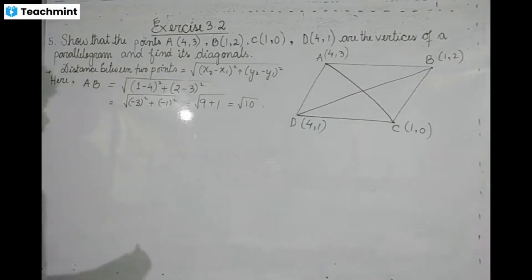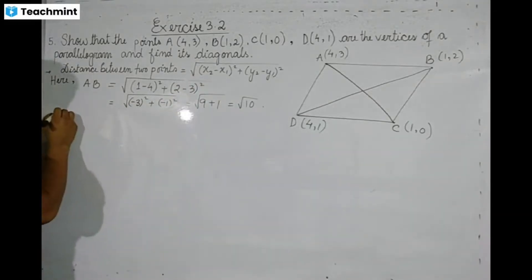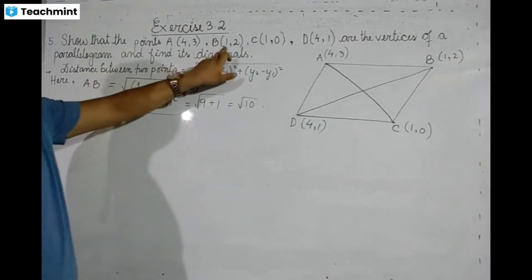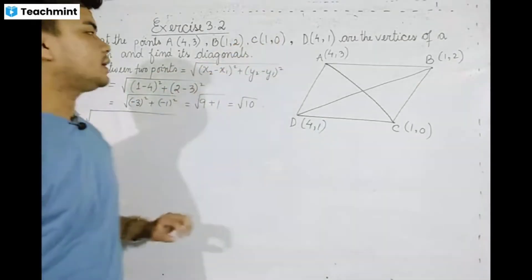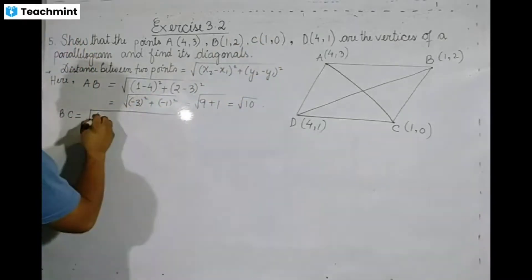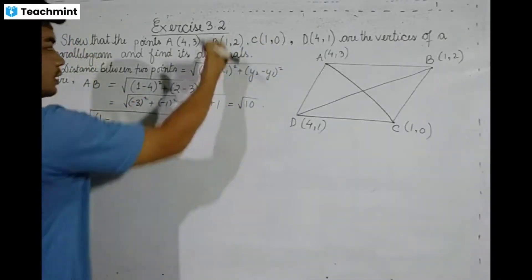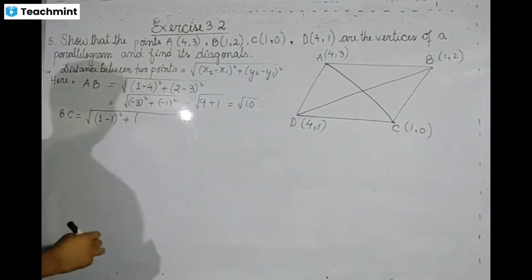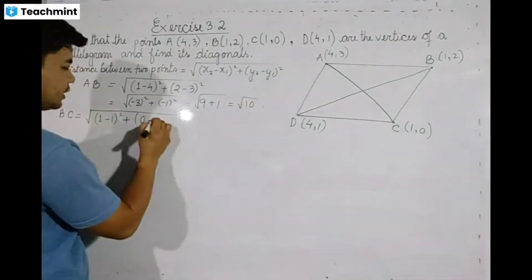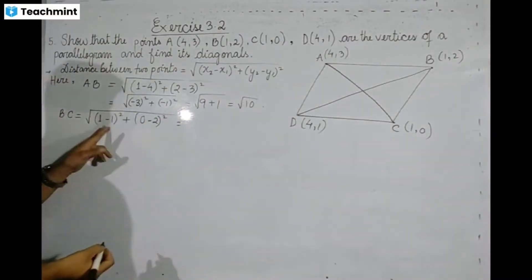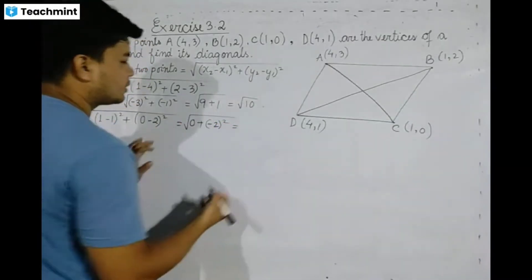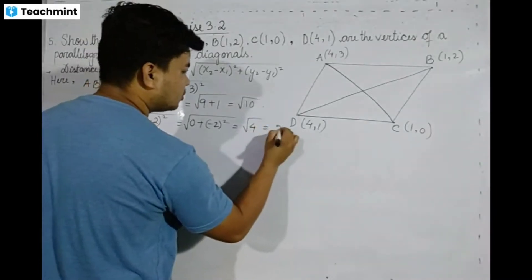Next we calculate BC. BC is equal to root over: B has coordinates x1=1, y1=2, and C has coordinates x2=1, y2=0. So x2 minus x1 equals 1 minus 1, whole square, plus y2 minus y1 equals 0 minus 2, whole square. That gives 0 plus minus 2 whole square, which is root 4, equal to 2. So BC equals 2.